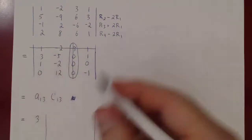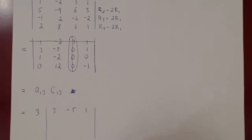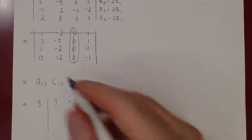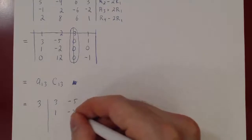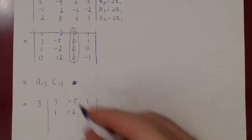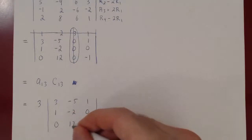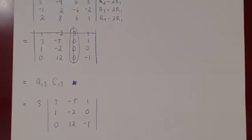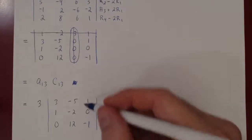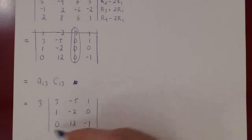The resulting 3x3 matrix has first row: 3, negative 5, 1; second row: 1, negative 2, 0; and third row: 0, 12, negative 1. Again, let's not use cofactor expansion directly. We have a single zero in a column or row, but one zero still means two non-zero cofactors to compute.